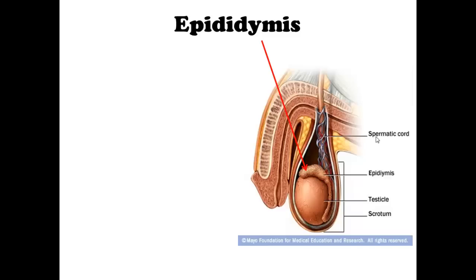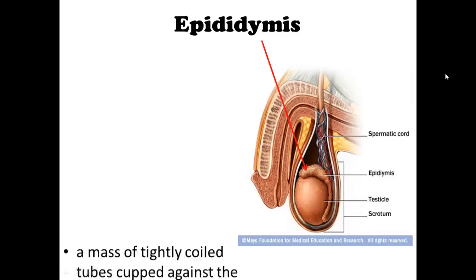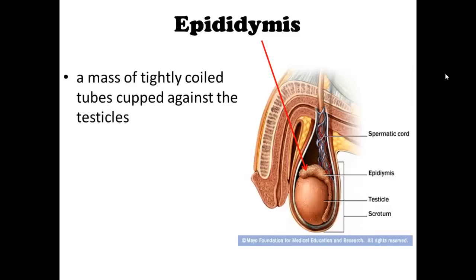Next we're going to talk about the epididymis. In this image, you can see the testes and the epididymis. It is a mass of tightly coiled tubes, cupped against one side of the testicle on the outside — it doesn't wrap around the entire thing.